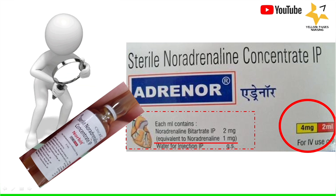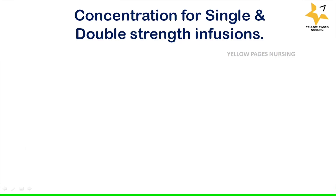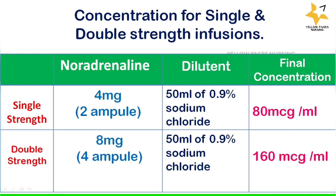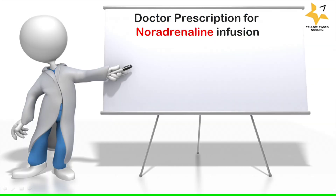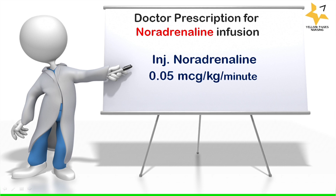For single strength infusion, take two ampoules — four milligram of noradrenaline — diluted in 50 ml of 0.9% sodium chloride, giving a final concentration of 80 microgram per ml. For double strength, take four ampoules — eight milligram — diluted in 50 ml of 0.9% sodium chloride, giving a final concentration of 160 microgram per ml.